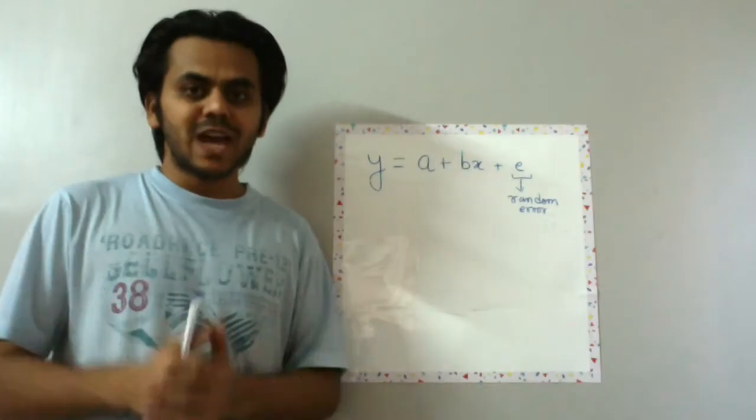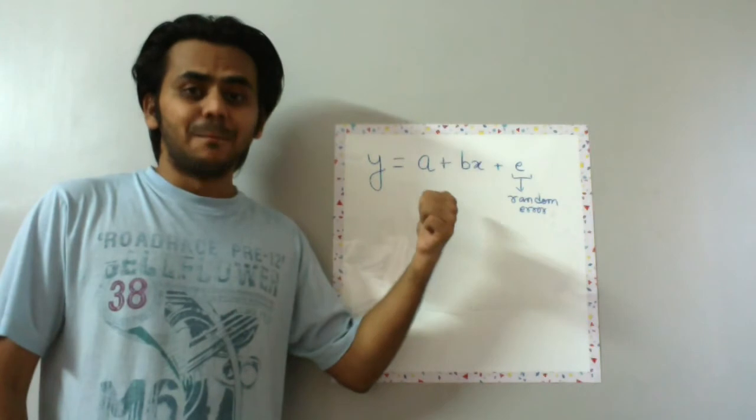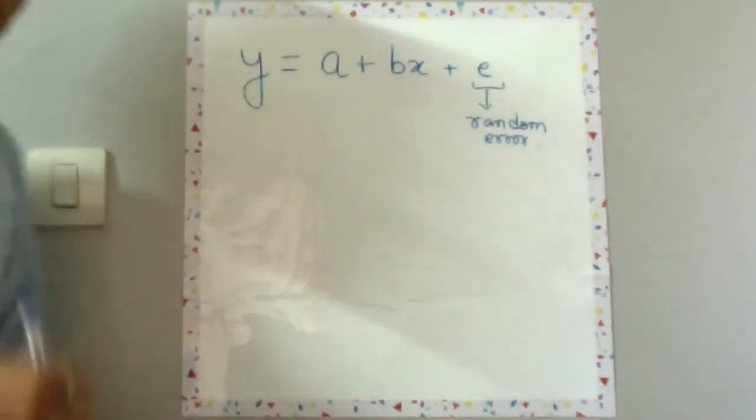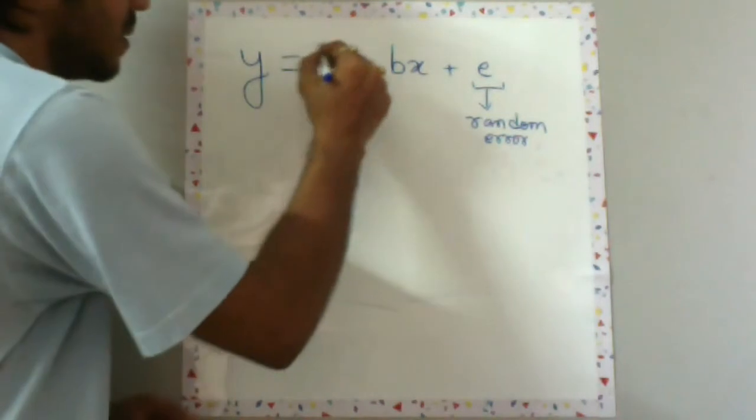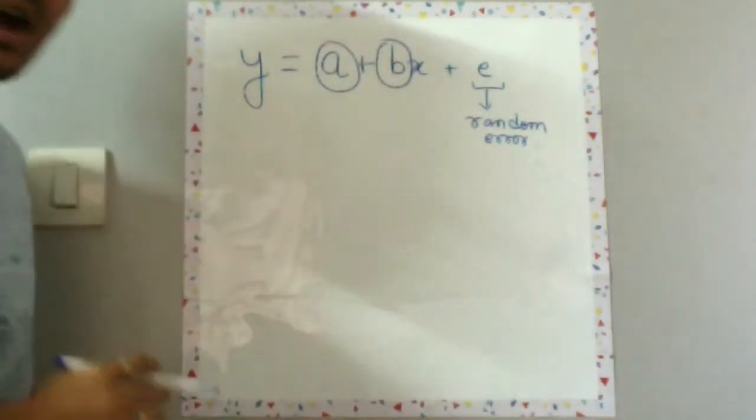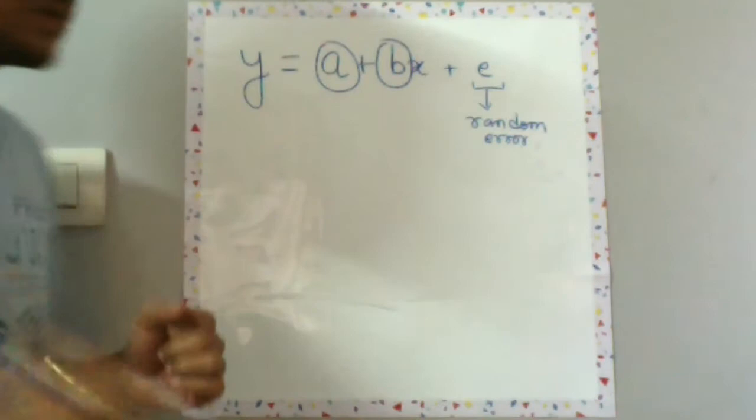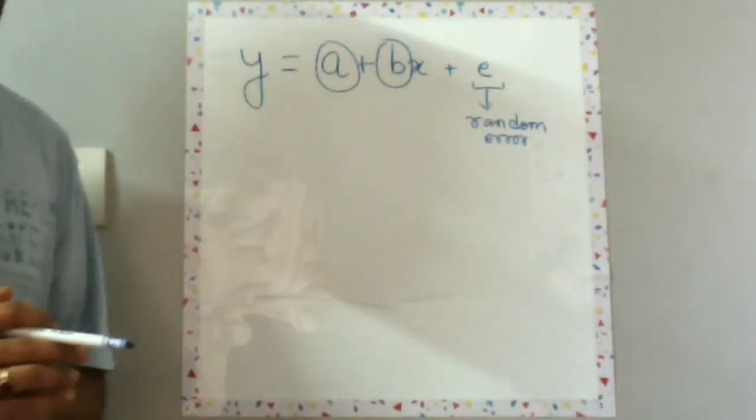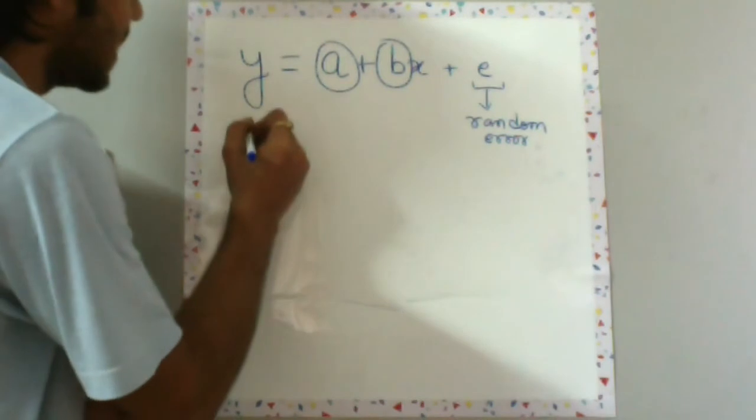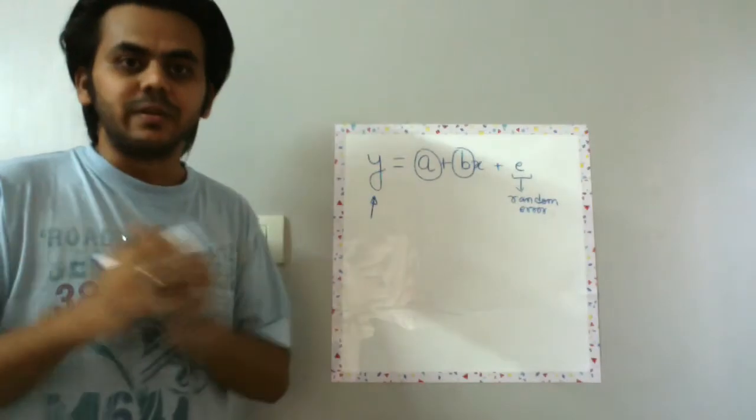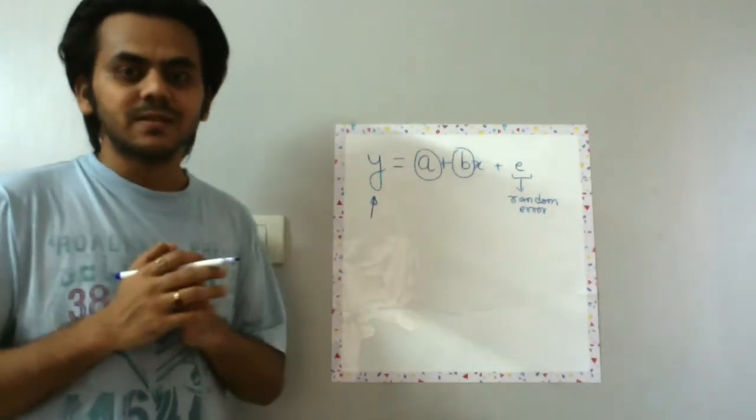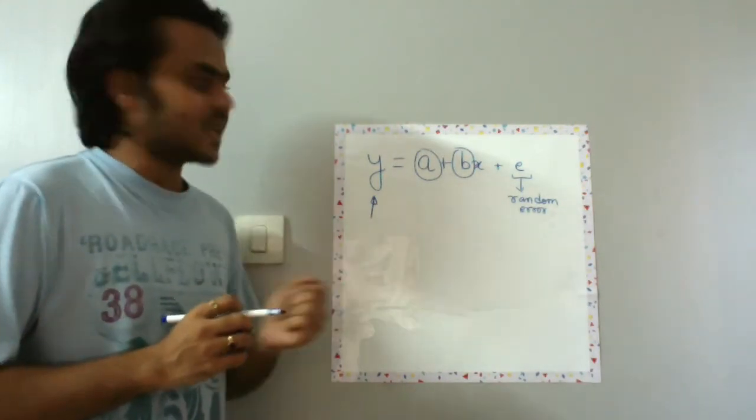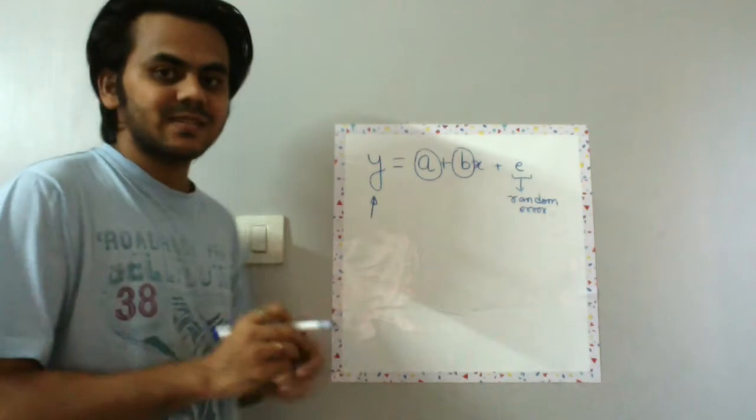So this magical or golden equation is a thing which you need to remember: y is equal to a plus bx plus e. A recap, these two values are to be estimated, this guy over here is random error we can't do much about it, and this is our object of interest or variable of interest.